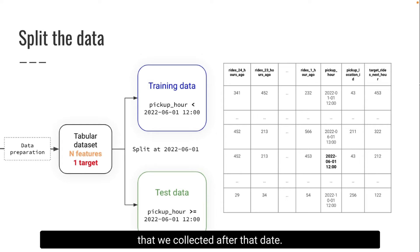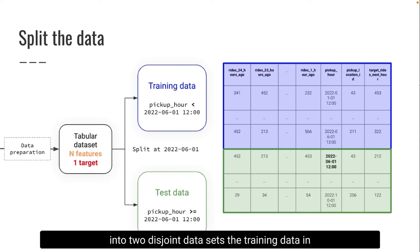So our dataset is going to be partitioned into two disjoint datasets: the training data in blue and the test data in green. Training data is what we use to build our model. So training data helps us build the model, the function that maps features to targets.